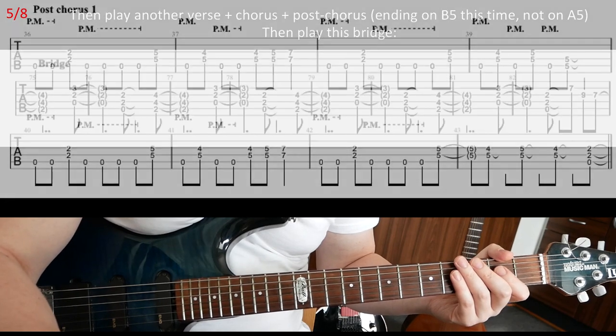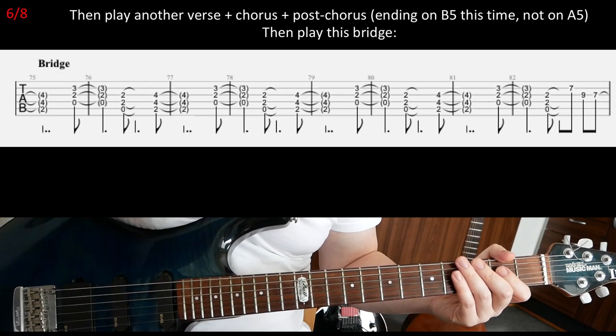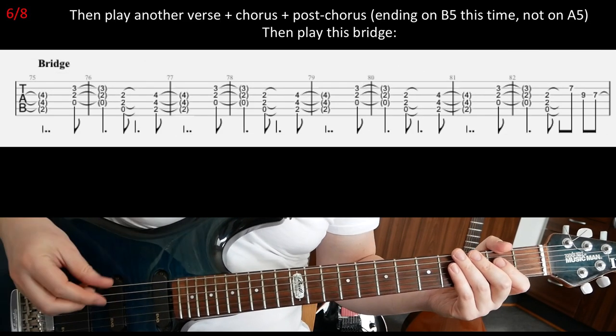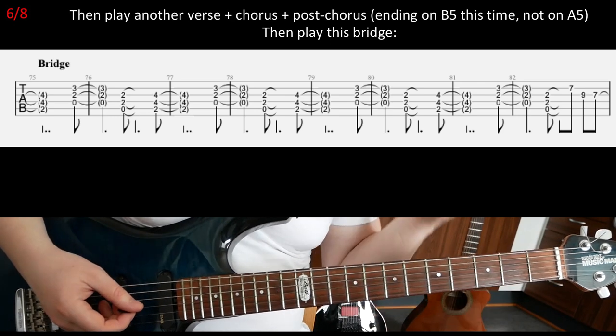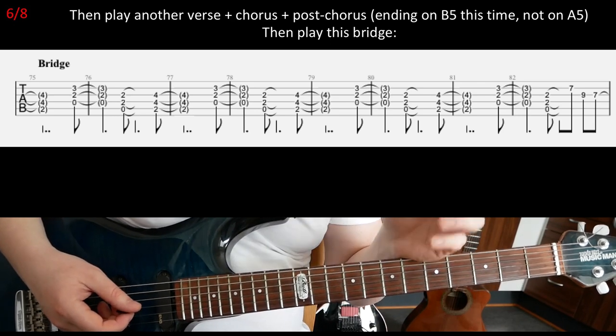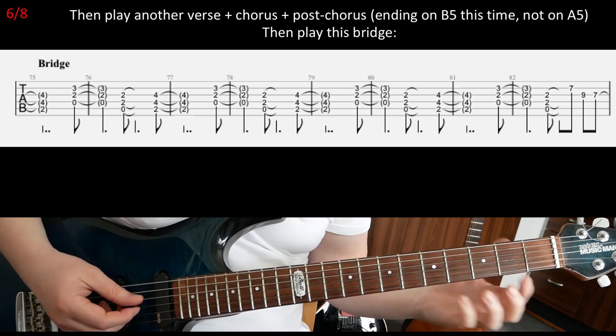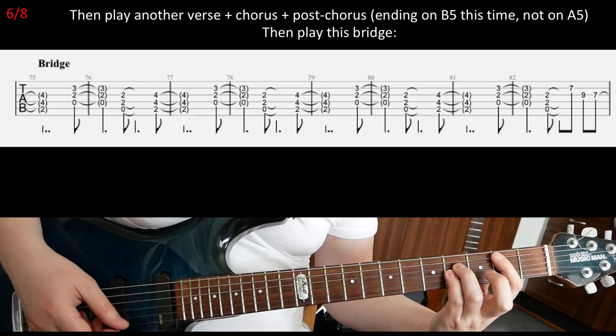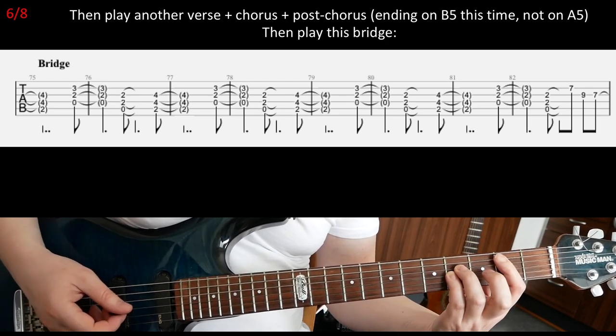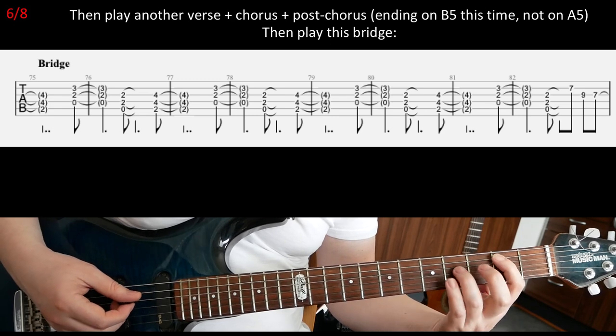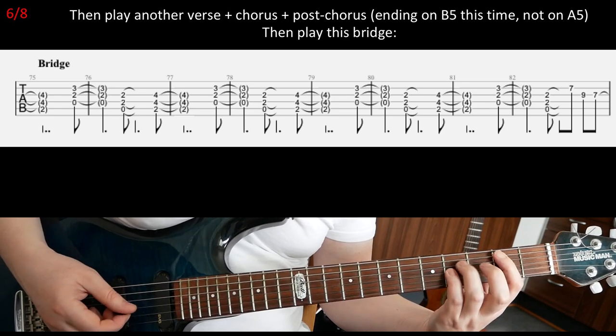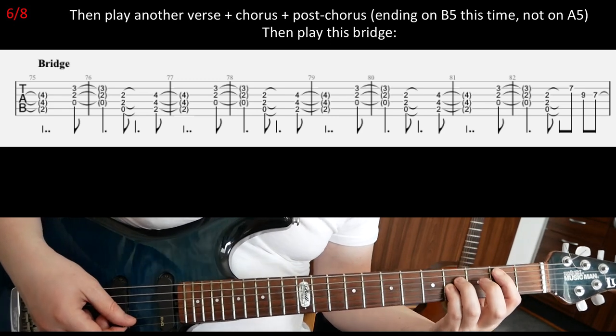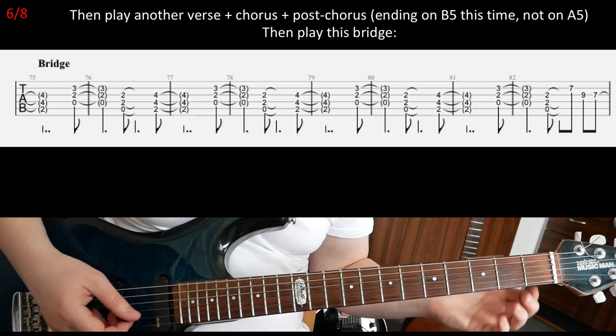So, right after that, slide six, you're gonna play another verse and chorus and post-chorus, exactly as before. But then the final, the very last chord in the post-chorus riff, it's gonna be B power chord this time. So second fret on A and the fourth fret on D and G. So don't forget that.